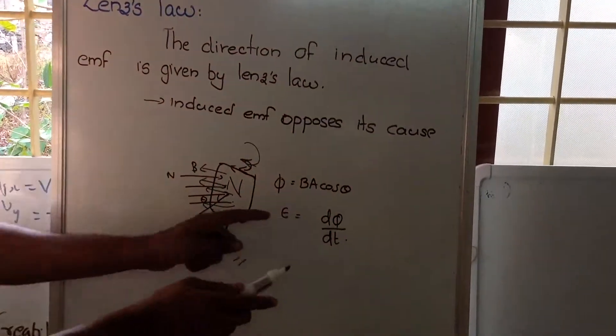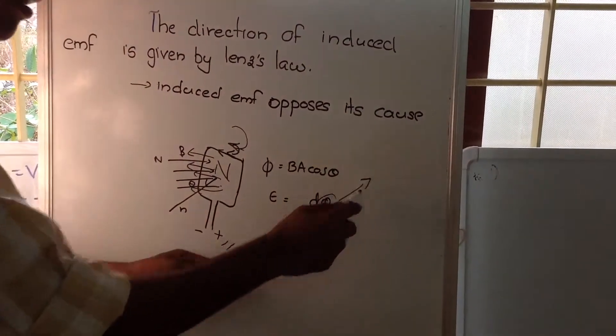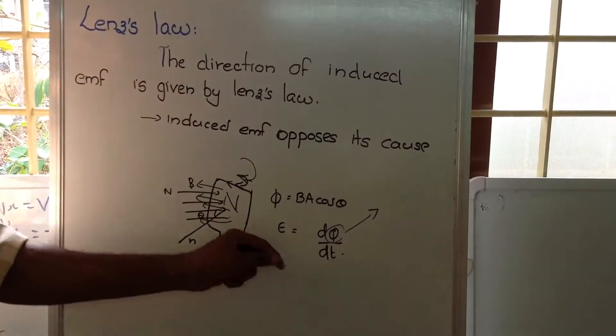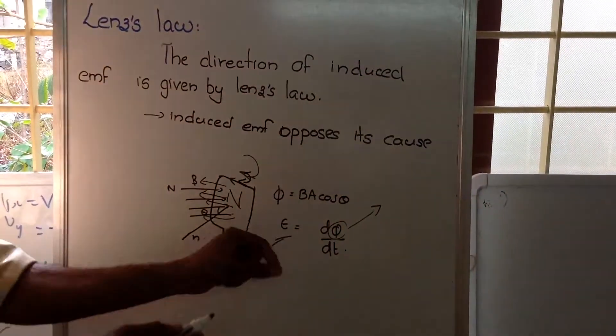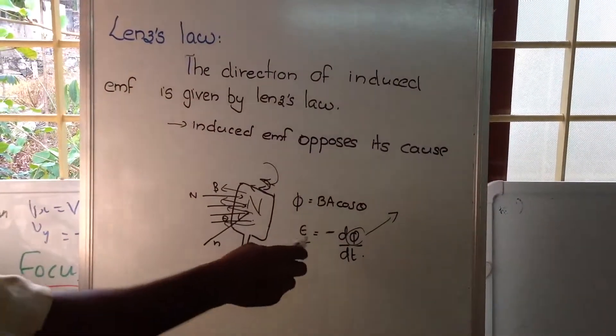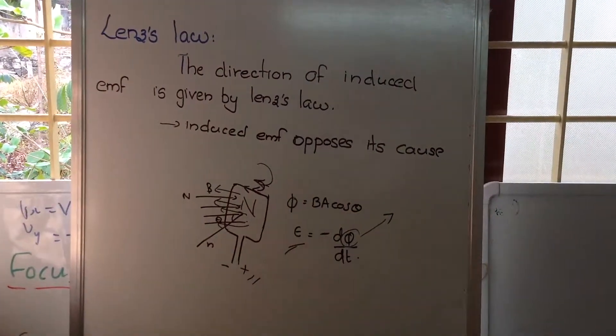The flux is created because of the magnetic field, it is our input but the output created here, the EMF opposes the cause that means they are opposite in direction. So, E is equal to negative d phi by dt.